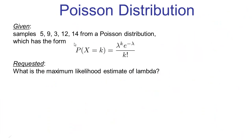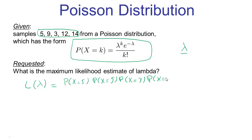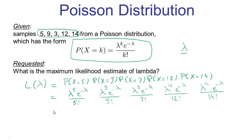Let's do another example with the Poisson distribution, which has the following form with free parameter lambda. We are given samples 5, 9, 3, 12, and 14. Writing down the likelihood as a function of lambda, it equals the probability of seeing 5 times the probability of seeing 9 times the probability of seeing 3 times the probability of seeing 12 times the probability of seeing 14. Following the Poisson probability expression, we get a simplified expression for the likelihood.